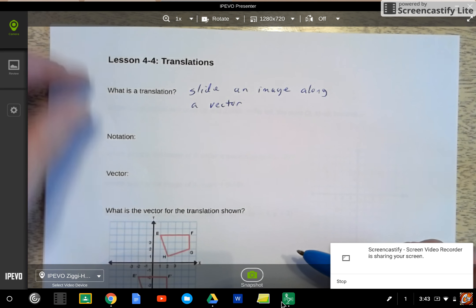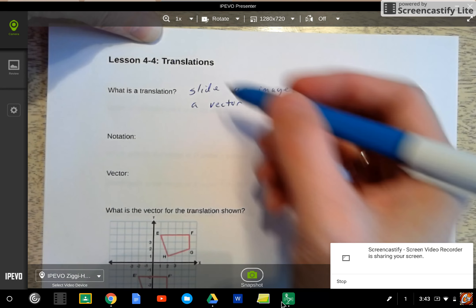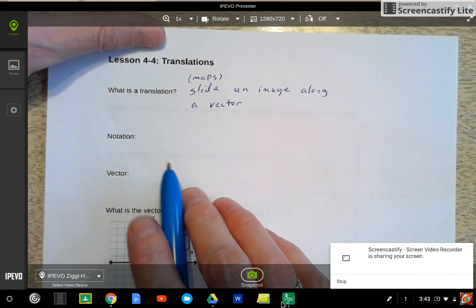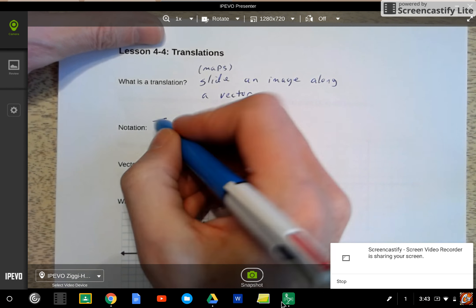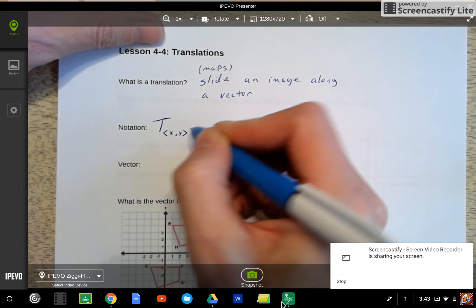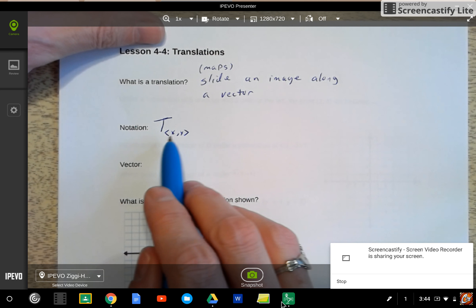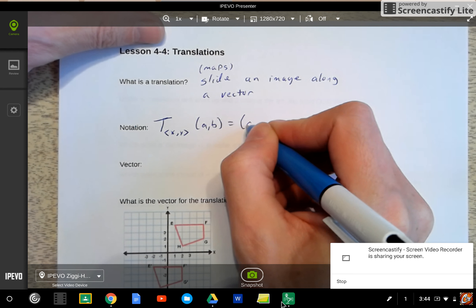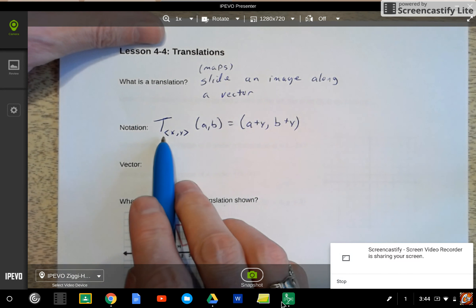So it maps the image along a vector. We could actually say instead of slide, if I want to be more mathematically accurate, I could say it maps an image along a vector. Our notation for translation, you can probably guess it's capital T. So I could translate along a vector. Let's call my vector XY. And we sometimes use these types of vectors or arrows, kind of like the greater and less than symbols to do that, of a point AB. And really all that's going to give me is A plus X, B plus Y.